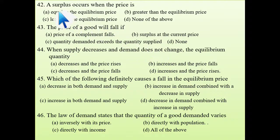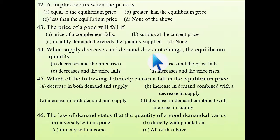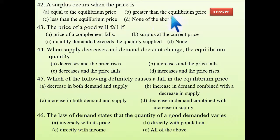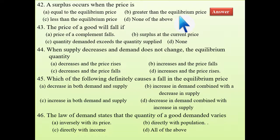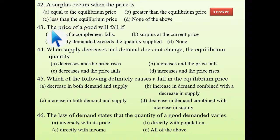Next: a surplus occurs when the price is — surplus and scarcity situations are covered in the market equilibrium lecture. Surplus occurs when the price is greater than the equilibrium price. When the price is greater, supply in the market will be more than demand, which is why a surplus occurs.